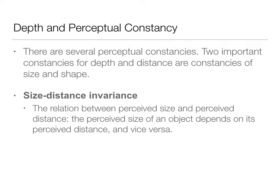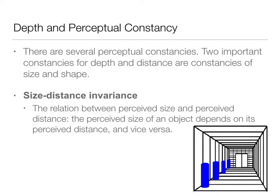Size, distance, and invariance is the relationship between size and perceived distance, and vice versa. When looking at a hallway with blue discs, we infer distance because of the differences in size, and we also infer information about the object size because of its distance. So we're getting information about object size because of its distance, but we're also getting information about distance because of the object size.